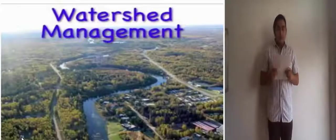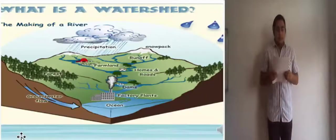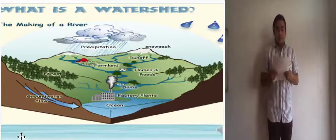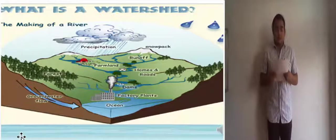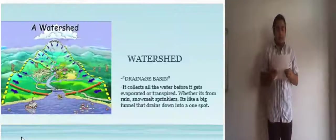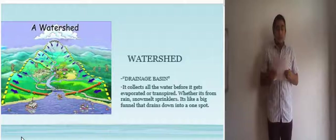Before we discuss what is watershed management, let us first know what is a watershed. Every body of water, whether rivers, lakes, plains, and even estuaries is a watershed. Watershed is a land area where surface water drains down into a single point. It is also called a drainage basin.